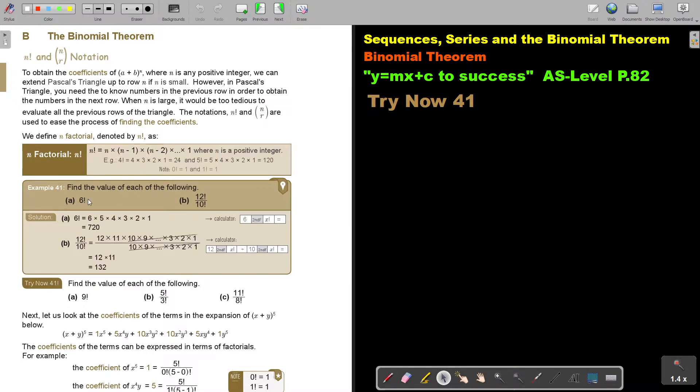Let's look at an example. Find the value of each of the following. 6 factorial. So basically, this is 6 times 5 times 4 times 3 times 2 times 1. Press it on your calculator, you get this. But I want to show you also how to press it on the calculator.